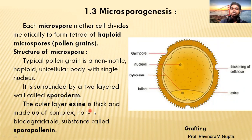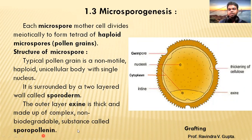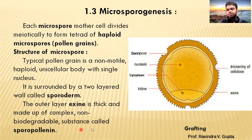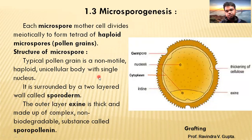The outer layer, exine, is thick and made up of a complex non-biodegradable substance called sporopollenin. The outer wall is exine and the inner wall is intine. Exine wall is thick, as you can see in this picture. Its composition is a complex non-biodegradable substance — sporopollenin — which forms the exine wall.